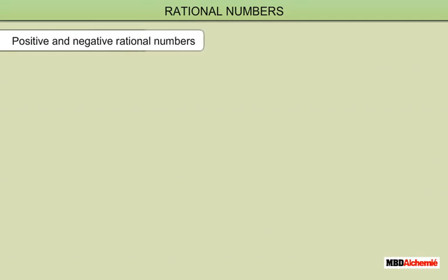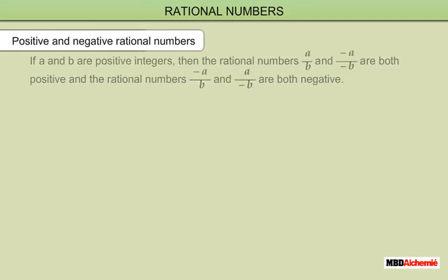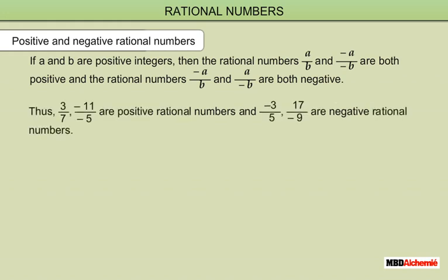Positive and Negative Rational Numbers: if a and b are positive integers, then the rational numbers a upon b and minus a upon minus b are both positive, and the rational numbers minus a upon b and a upon minus b are both negative. Thus, 3 upon 7 and minus 11 upon minus 5 are positive rational numbers, and minus 3 upon 5 and 17 upon minus 9 are negative rational numbers.